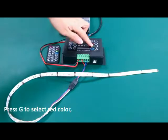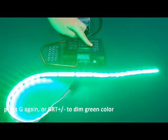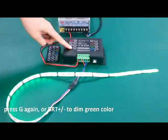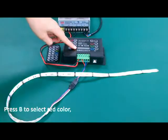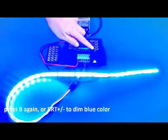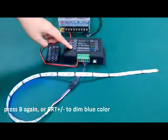Press G to dim green color. Press B to dim blue color.